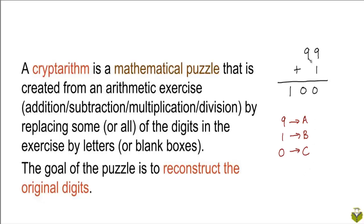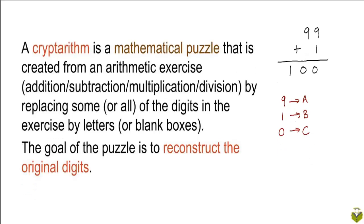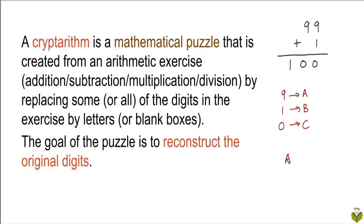So each digit must be replaced by a different letter. After this replacement, this would be the encoded version of the problem. Now suppose you are given this encoded version and you are asked to figure out which numbers the three letters A, B, and C represent. How would you reconstruct the original digits of this addition problem? This would be a cryptarithm.